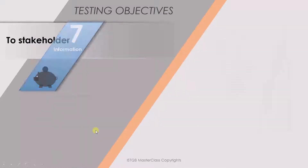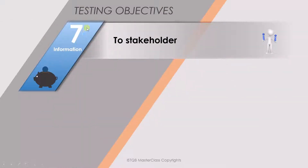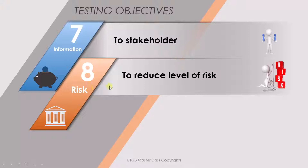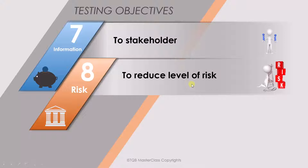The seventh point is information — we have to gather information to provide to the stakeholder, such as how many test cases have been done and what our coverage is. The eighth point is risk. The reason we are doing testing is to reduce risk so customers don't find faults in our products. For example, if five defects are present in a software and our testing reveals four, then we are reducing the risk.